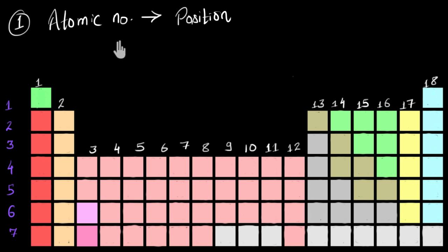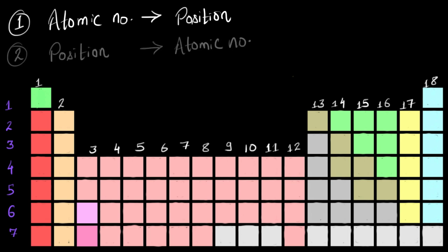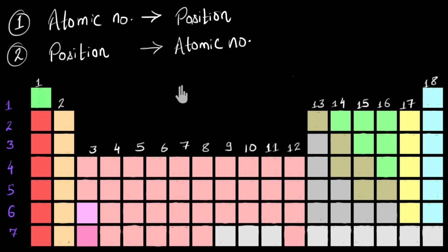If you know the atomic number of an element, can you pinpoint its position on the periodic table? By position, I basically mean the period number and the group number. If you know the period number and the group number, you can exactly pinpoint the position of the element. And even vice versa — if you know the position of an element, can you find out its atomic number? In this video, we are going to see how this happens with the help of some examples.